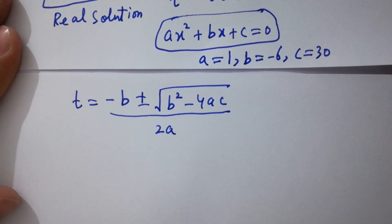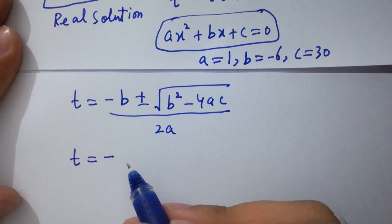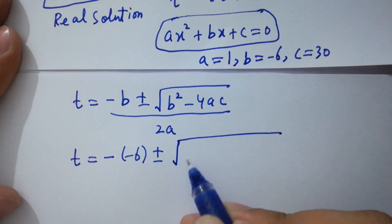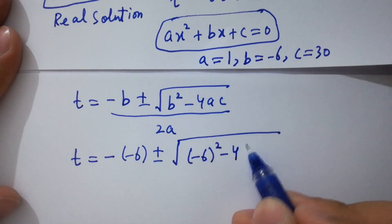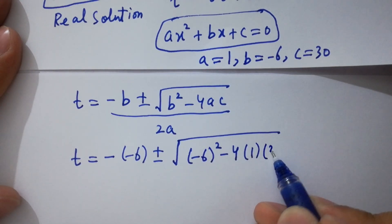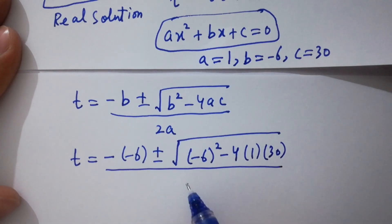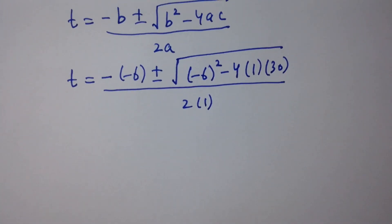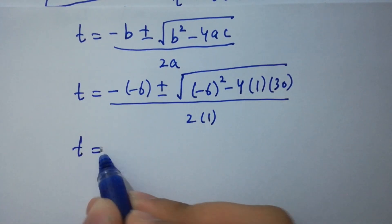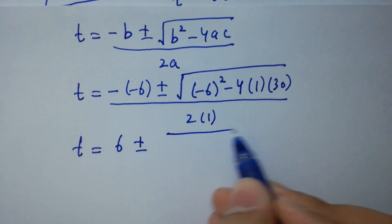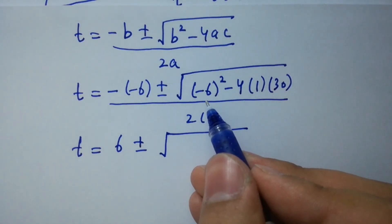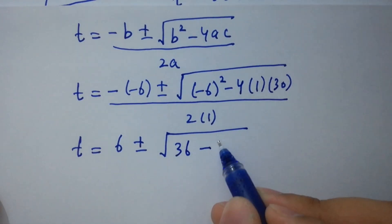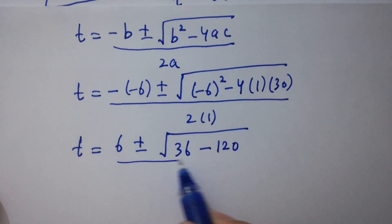Applying the quadratic formula: t equals minus b plus or minus square root of b squared minus 4ac, all over 2a. Putting the values: t equals minus of minus 6, plus or minus square root of minus 6 squared minus 4 times 1 times 30, over 2 times 1. Simplifying: 6 squared is 36, and 4 times 30 is 120.